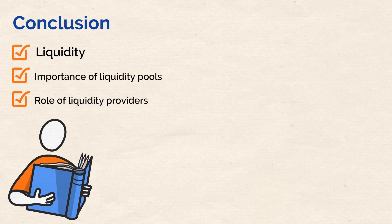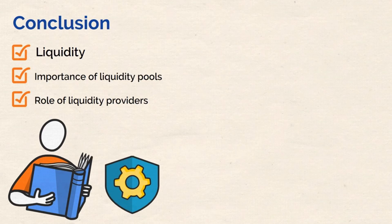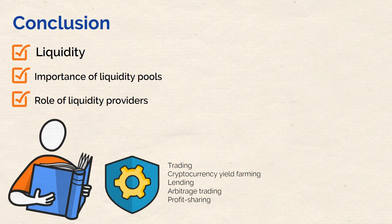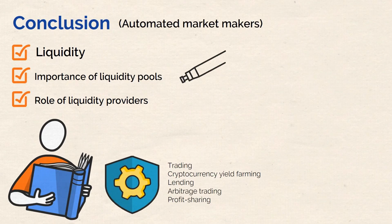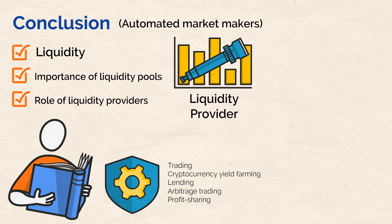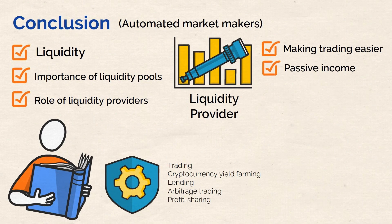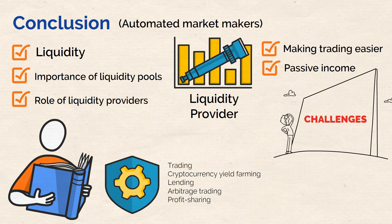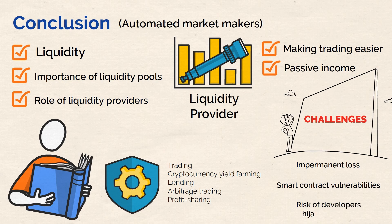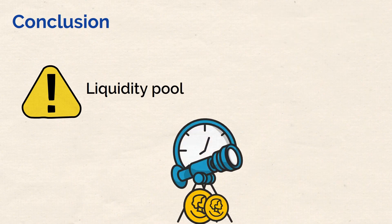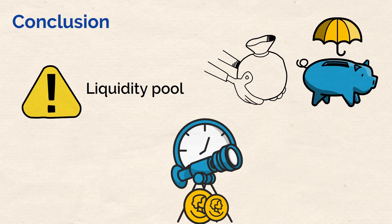To recap: in this video you've learned the concept of liquidity pools in crypto — what liquidity means, the importance of liquidity pools, and the role of liquidity providers. Liquidity pools help create a more liquid, decentralized finance system, covering aspects such as trading, yield farming, lending, arbitrage trading, and profit sharing. Innovations like automated market makers have revolutionized the market, allowing anyone to become a liquidity provider. Liquidity pools offer benefits including making trading easier and providing passive income, but you need to be careful with challenges such as impermanent loss, smart contract vulnerabilities, and the risk of developers hijacking pools. Always conduct appropriate due diligence before depositing funds and digital assets.